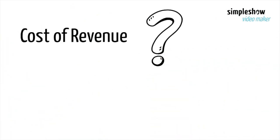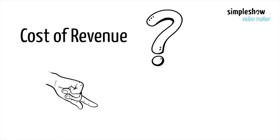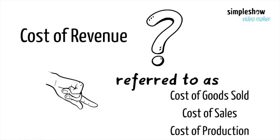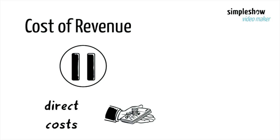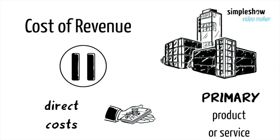What is cost of revenue? It is referred to as cost of goods sold, cost of sales, or cost of production. It basically includes the direct costs of making the company's primary product or service in one year.